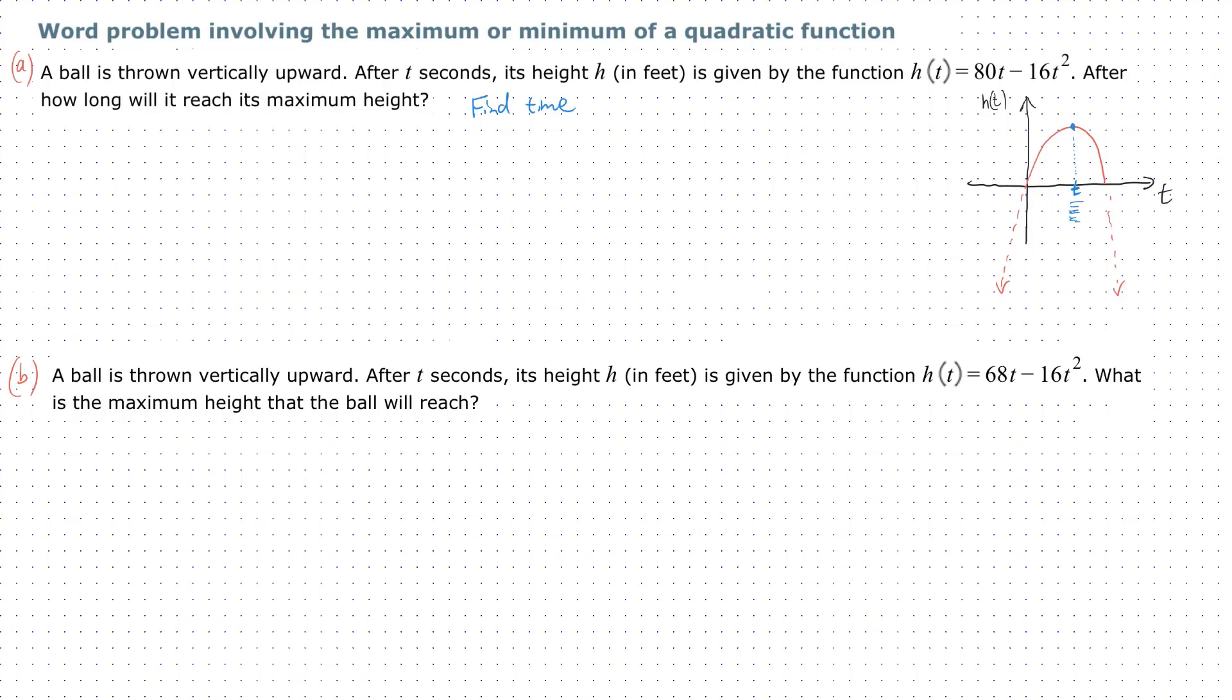Our goal is to get h(t) into this form: a(t - h)² + k. If we can get it in that form, we're in good shape.